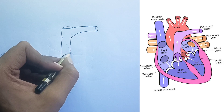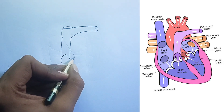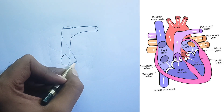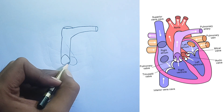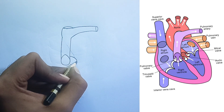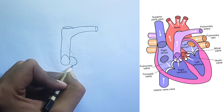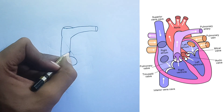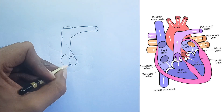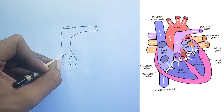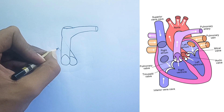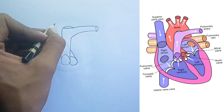Left atrium: this is the upper left chamber. It receives oxygenated blood from the lungs via the pulmonary veins. Left ventricle: this is the lower left and most muscular chamber. It receives oxygenated blood from the left atrium and pumps it to the rest of the body via the aorta.